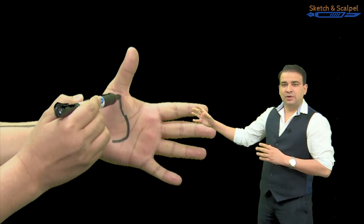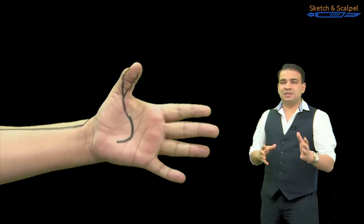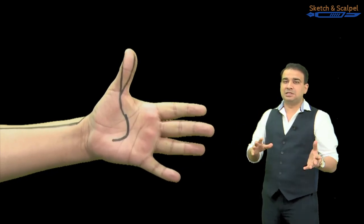Also, this artery gives off the princeps pollicis artery. You can see it is supplying both sides of the thumb, so we call it princeps pollicis artery. It's the principal artery of the thumb.